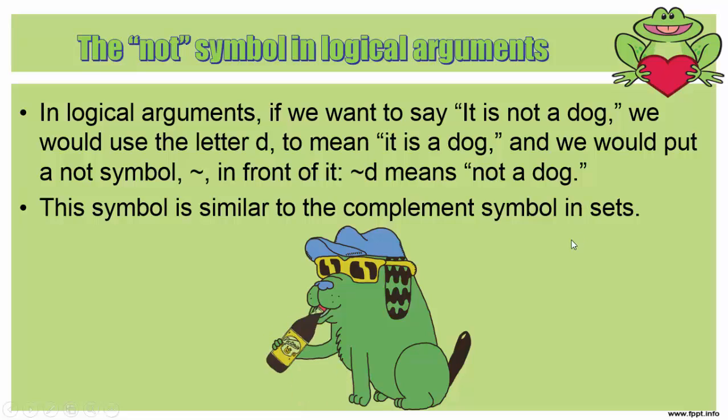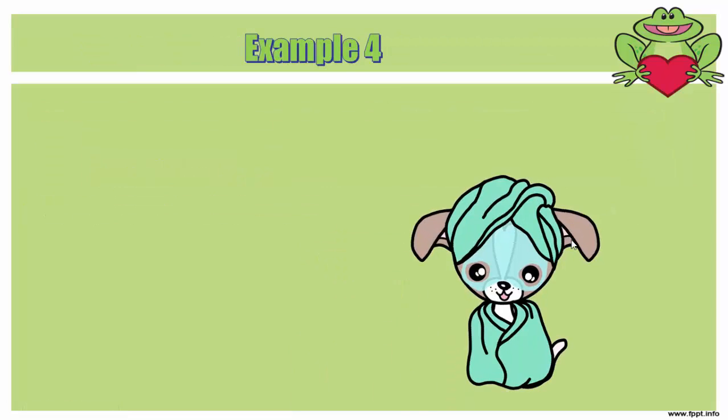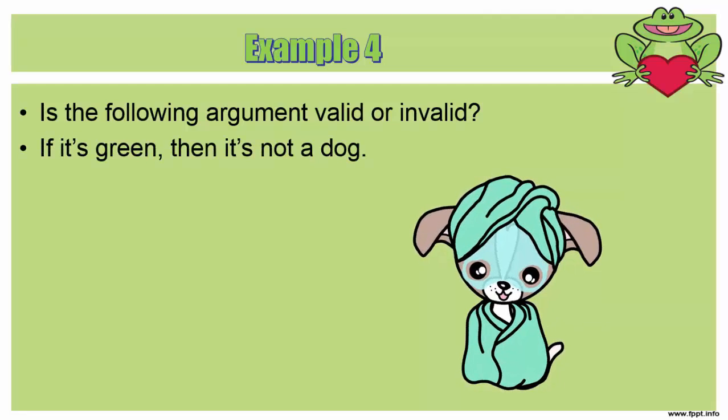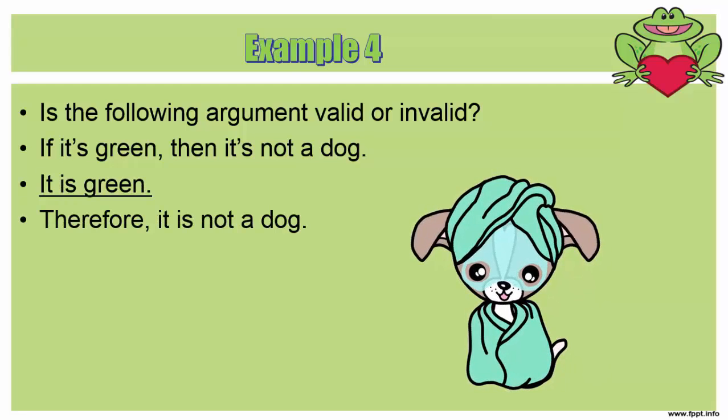Let's look at example number four. We're going to look at the following argument and see if it's invalid or valid. If it is green, then it is not a dog. It is green, therefore it is not a dog.